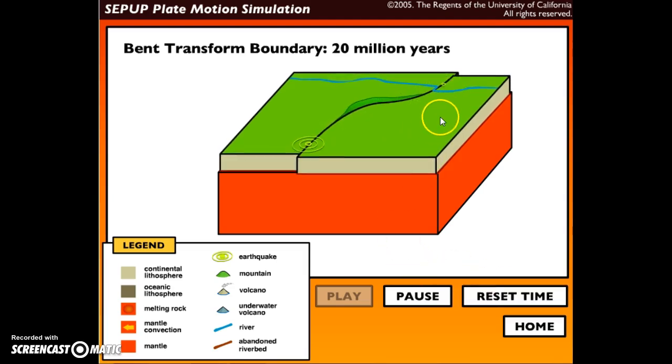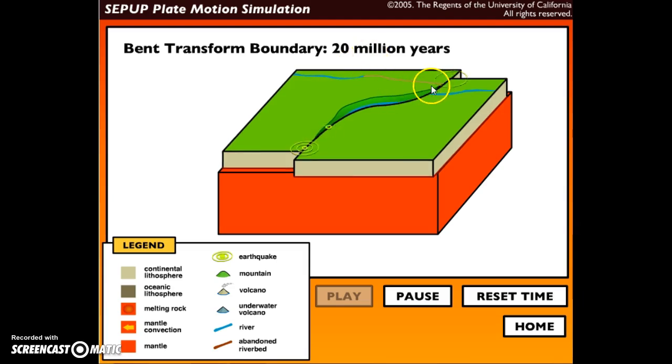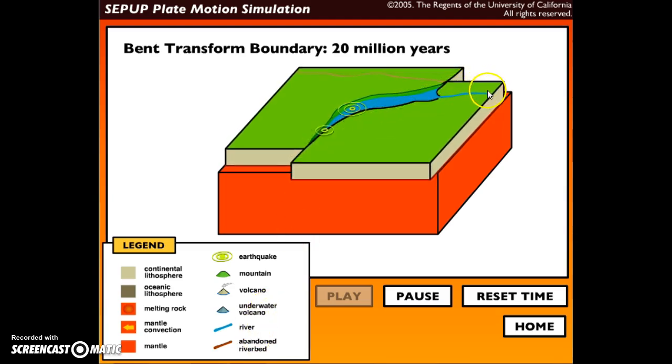This plate is moving closer to you and the left plate is moving farther away. Notice this crevice, and in that crevice is being formed a river. Notice that this part of the river no longer matches with that.